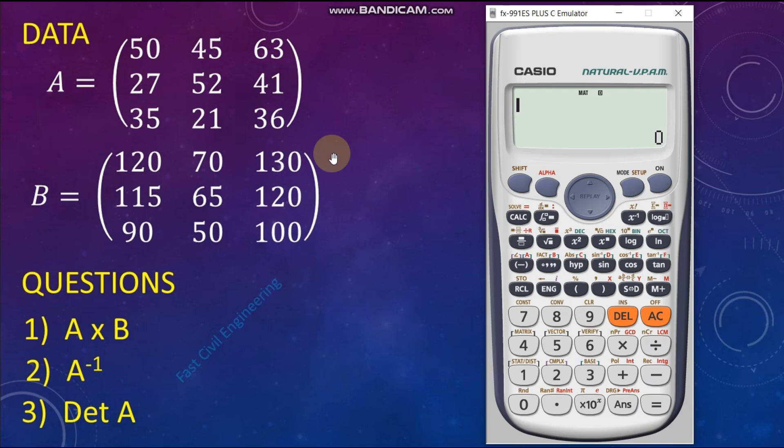Let us input the Matrix B. For that, we have to go for Matrix Menu. That is Shift Number 4. Press 2 for Data. Press 2 for Matrix B. Press 1 for 3×3. Input the Matrix B.